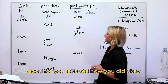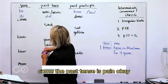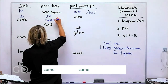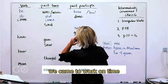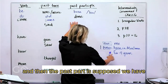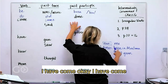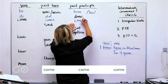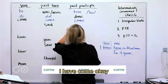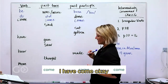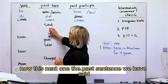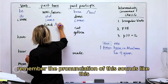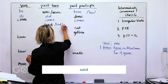Okay: 'come' — the past tense is 'came.' For example, 'He came to work on time.' And then the past participle: 'I have come.' The next one — the past tense is 'said.' Remember the pronunciation of this sounds like 'sed'.